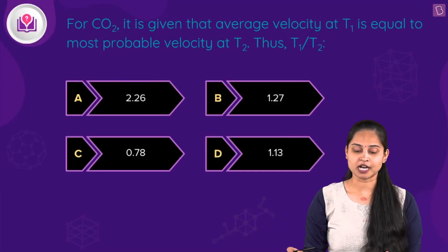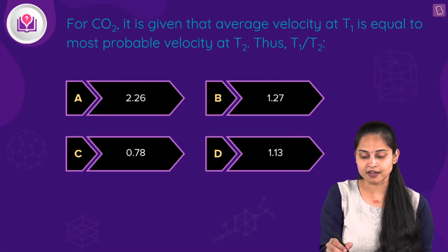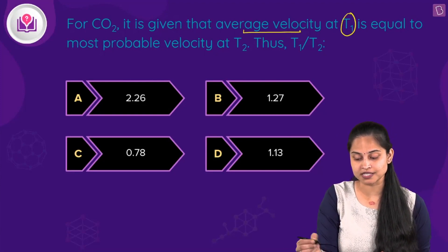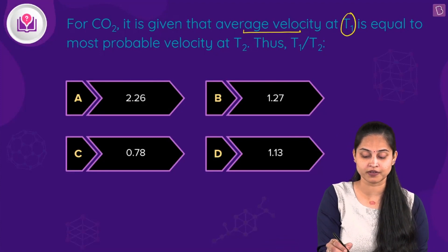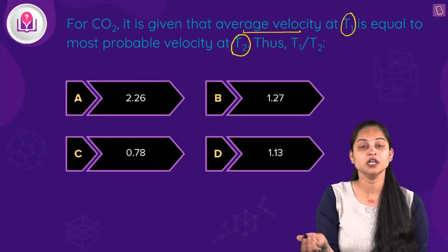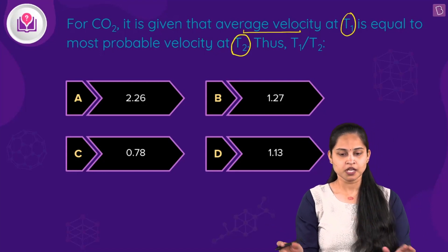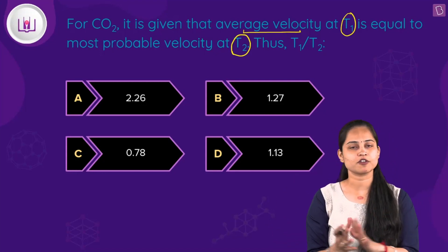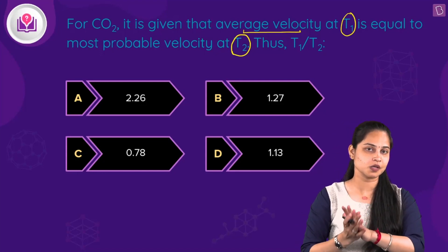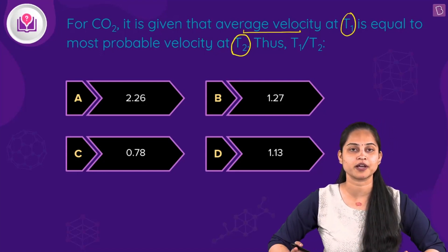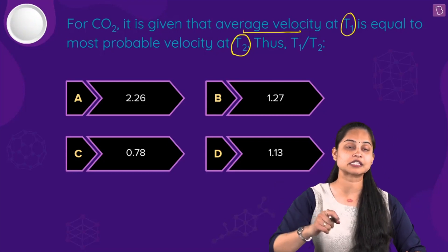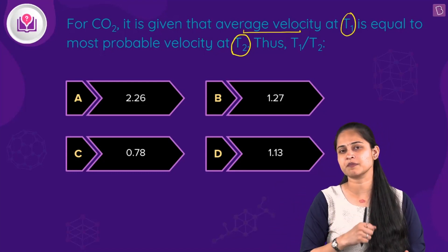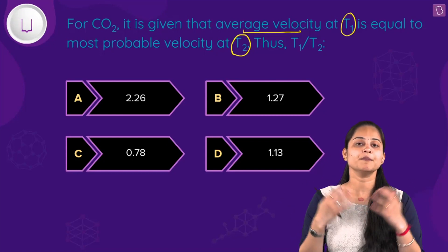The question is for carbon dioxide: the average velocity at temperature T1 equals the most probable velocity at temperature T2. We need to find T1/T2. The average velocity is total displacement divided by total time, whereas the most probable velocity is the velocity possessed by the maximum number of molecules at the same temperature.